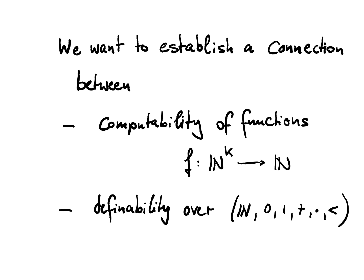In order to prove the Gödel incompleteness theorems, we need to establish a connection between computability of functions from tuples of natural numbers to natural numbers on the one hand, and definability over the structure of the natural numbers with constants 0, 1, plus, times, and less than.